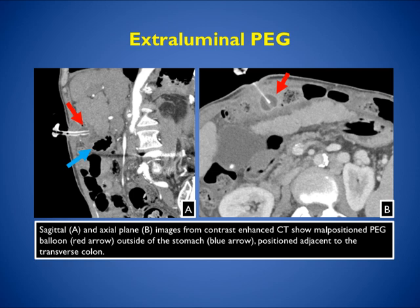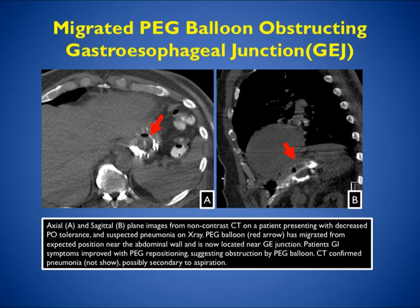In this example, the CT shows a malpositioned PEG balloon outside the stomach, positioned adjacent to the transverse colon — illustrating why injury to the liver or colon is indeed very possible. In another patient, the PEG balloon migrated proximally and is now obstructing the gastroesophageal junction. Usually migration is distal, but proximal migration can occur. The patient's symptoms improved with GI repositioning of the PEG, but this can lead to all sorts of complications.